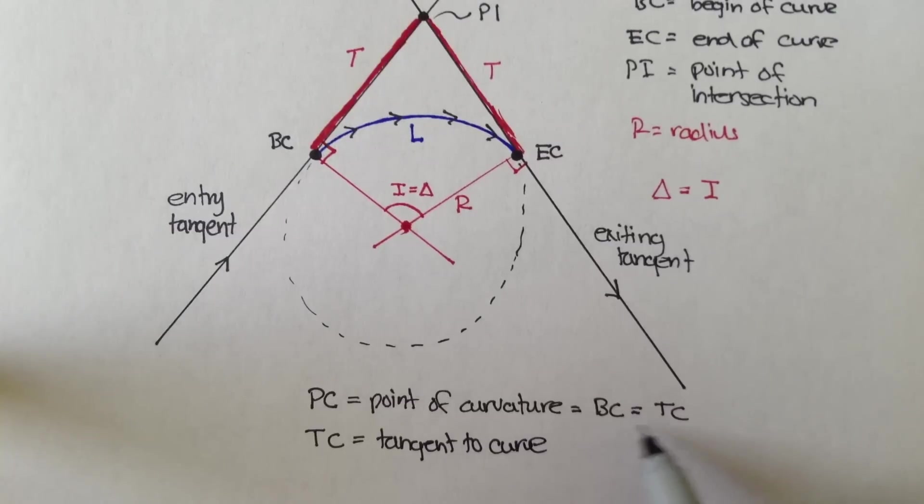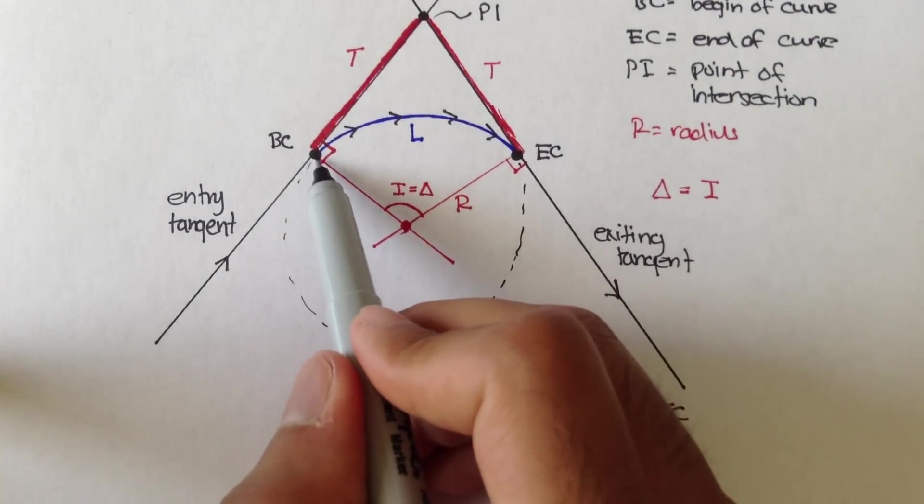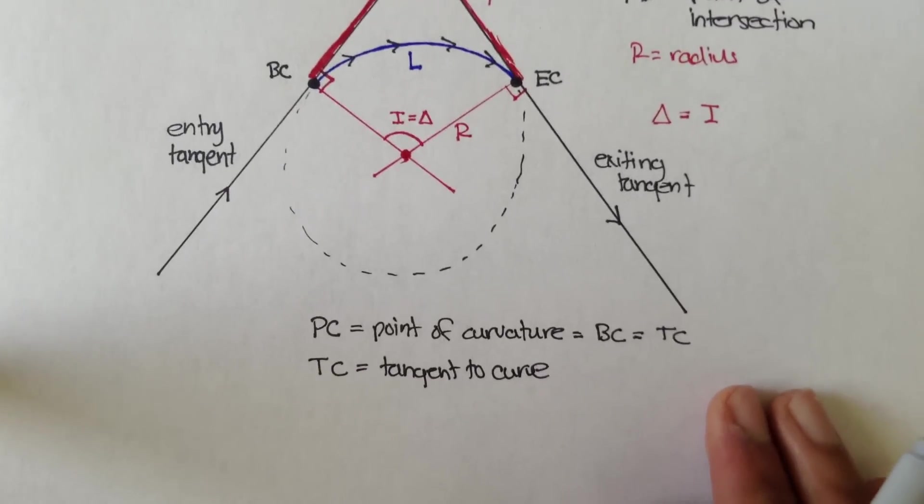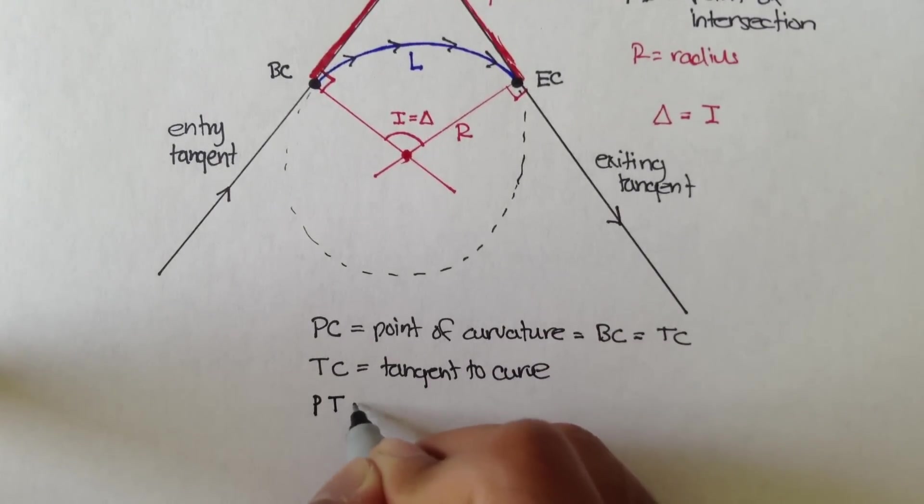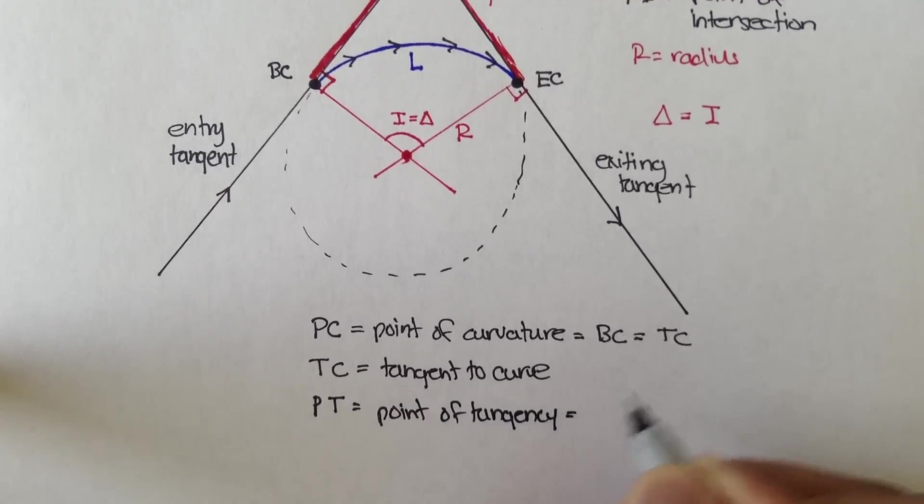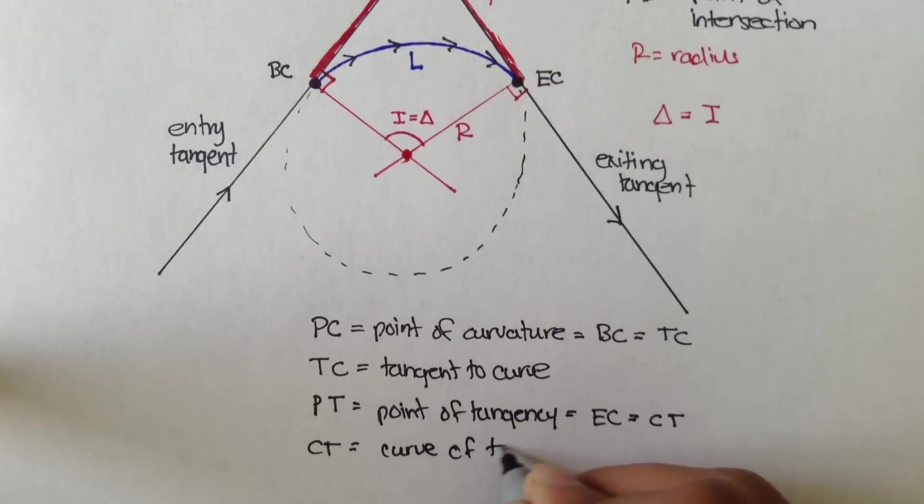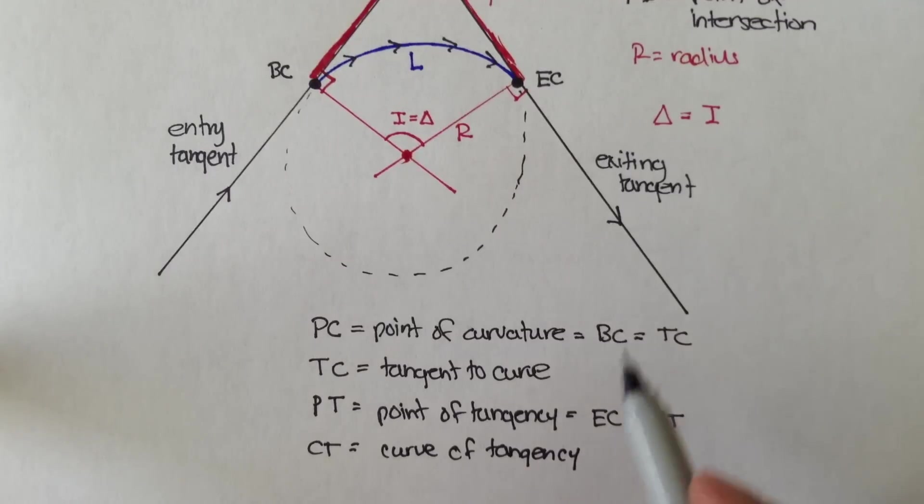Really, BC, TC, PC, they're all the same thing. All they mean is where the curve starts, the BC. PT is the point of tangency, and that's the same thing as EC or CT. And CT stands for curve of tangency. And really, it's just another way of saying the end of the curve.